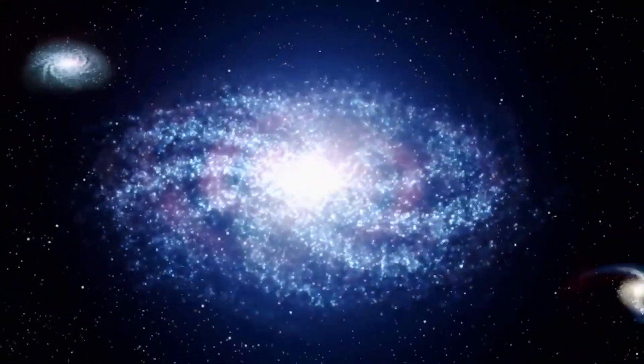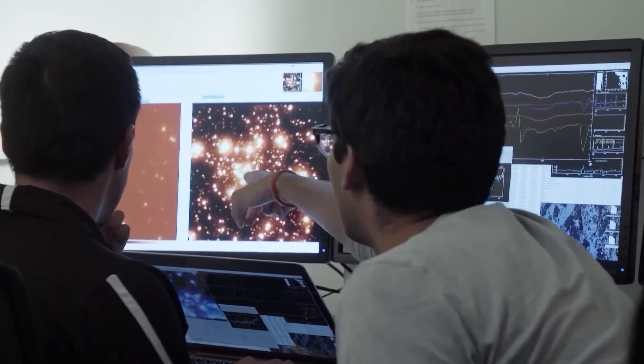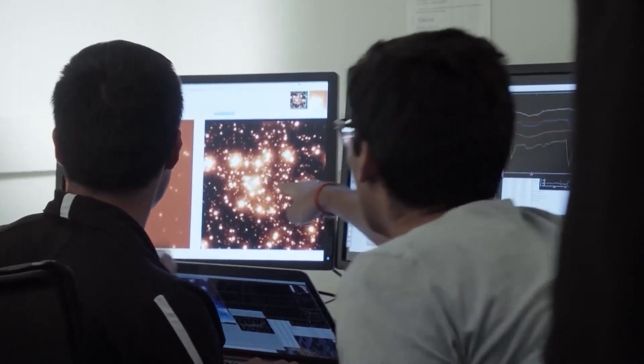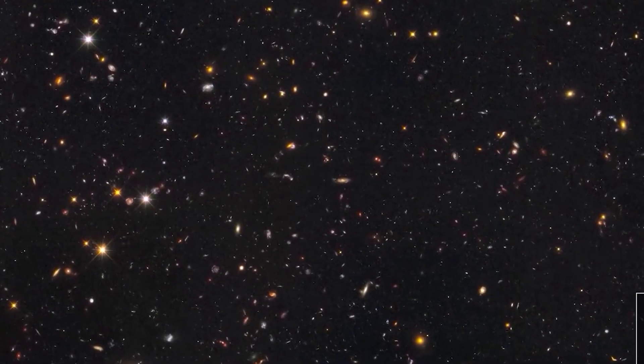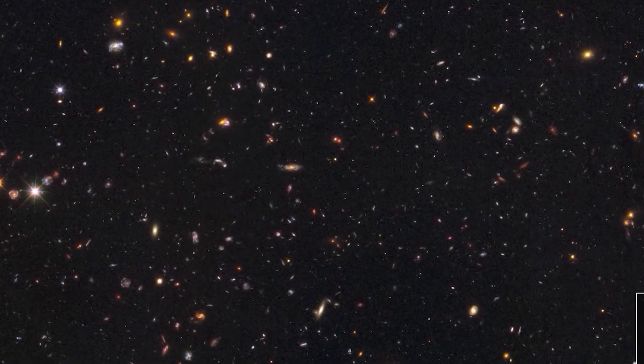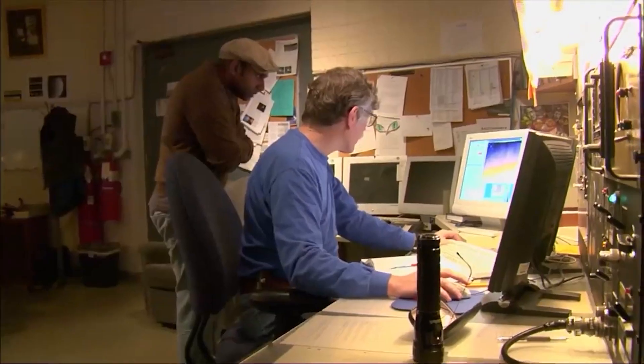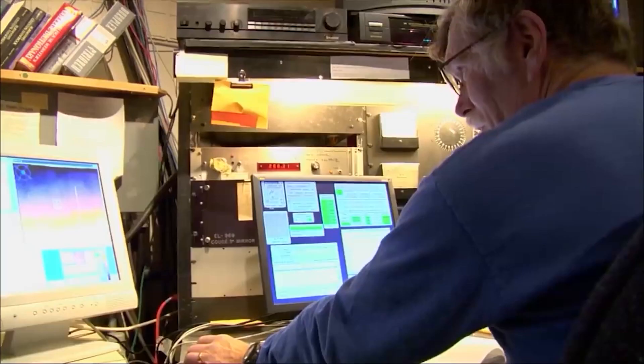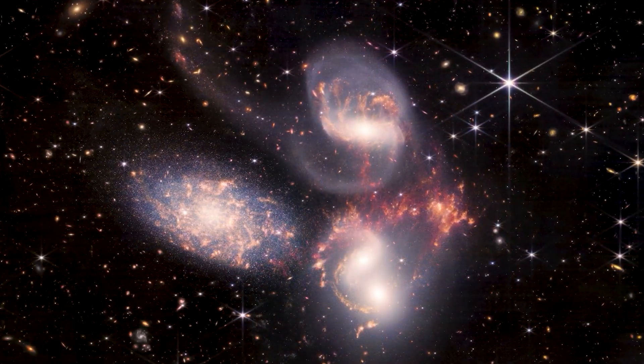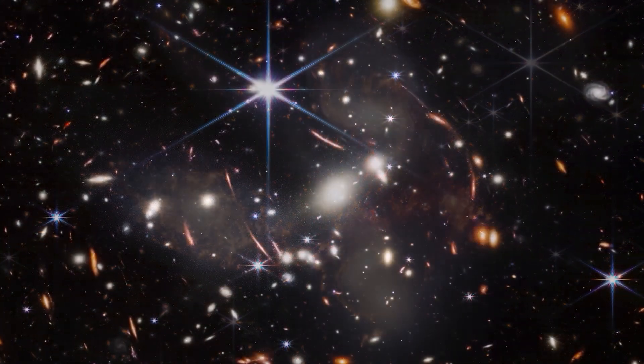These early galaxies also surprised us with active star formation and unexpected structures, challenging what we knew about galactic evolution. By studying these ancient galaxies, James Webb provided valuable insights into their properties, masses, and compositions, and how they interact with their surroundings. These findings highlight how James Webb is revealing new details of the ancient universe, allowing astronomers to better understand how galaxies form and change.